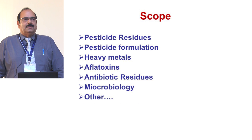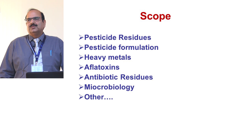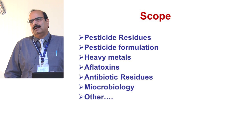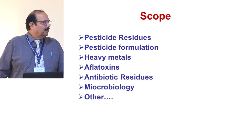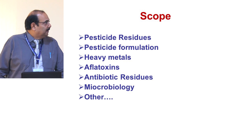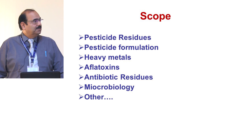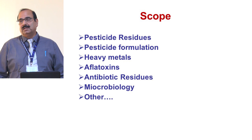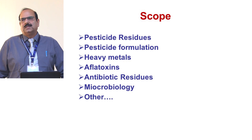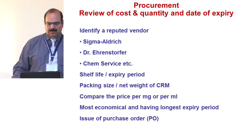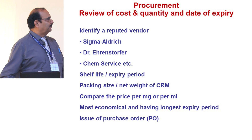The most important point is the scope of the laboratory — what you are going to procure. Identify the present scope or what you are likely to add, so you can plan your shopping list and decide which CRM or chemical to buy. For example, if a laboratory is testing pesticide formulations, they need the reference standard for that pesticide. If testing heavy metals, maybe 10, 15, or 20 metals. Also aflatoxin, antibiotics, and others.